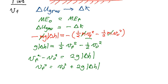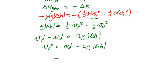And then all we've got to do is take the square root of both sides. V_f equals the square root of v_0 squared plus 2g times delta h.